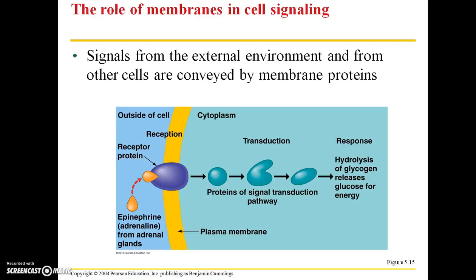Cell membranes also participate in various types of cell signaling. Signals are going to be coming either from the external environment or from other cells, and those signals are going to be conveyed by membrane proteins. In this depiction, everything within this area is going to be inside the cell and everything out here is outside of the cell. We have this purple receptor protein here that is going to bind with epinephrine, which is adrenaline, from our adrenal glands.